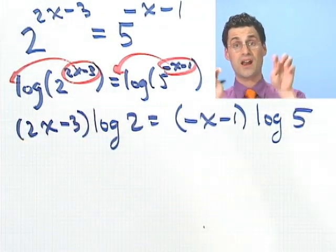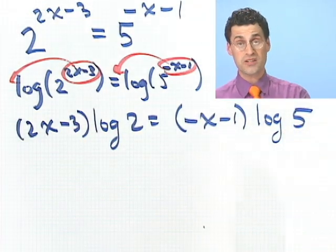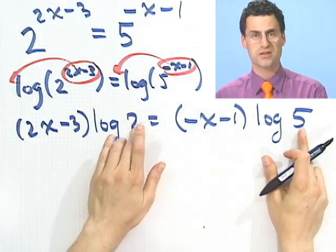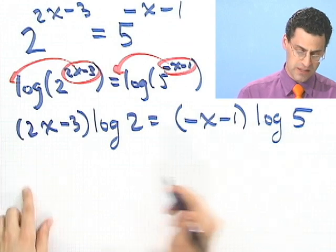Well, now all the x's are down below. They're not in the exponents anymore. Of course, there's a price you pay for that. I now have logs in the picture, but okay, that's okay. They're just logs of numbers, so what do I care about? I can distribute these logs, and I'd see,